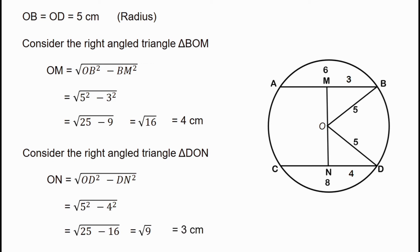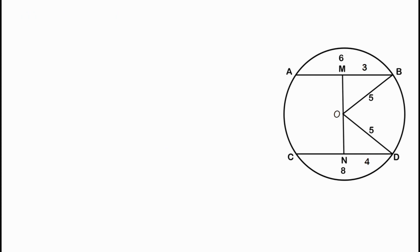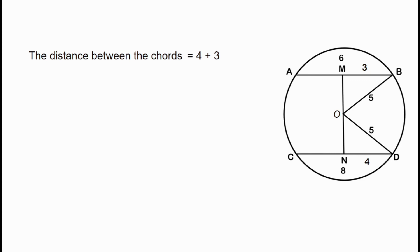We take the two lengths. When the chords are on opposite sides of the diameter, the distance between them is OM plus ON. That is equal to 4 plus 3, which equals 7 cm.